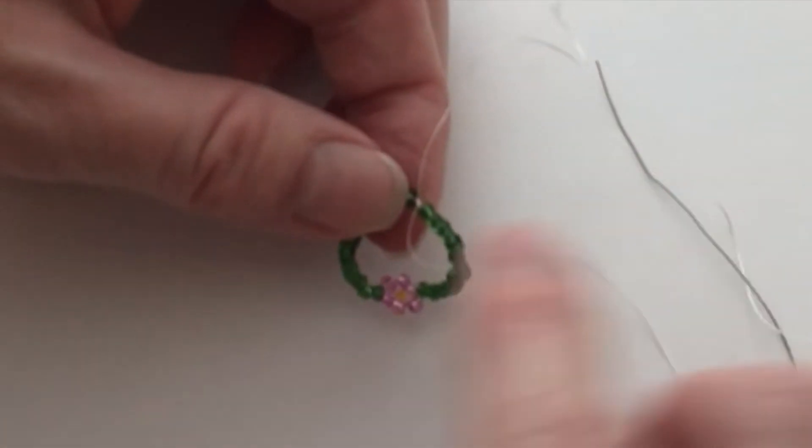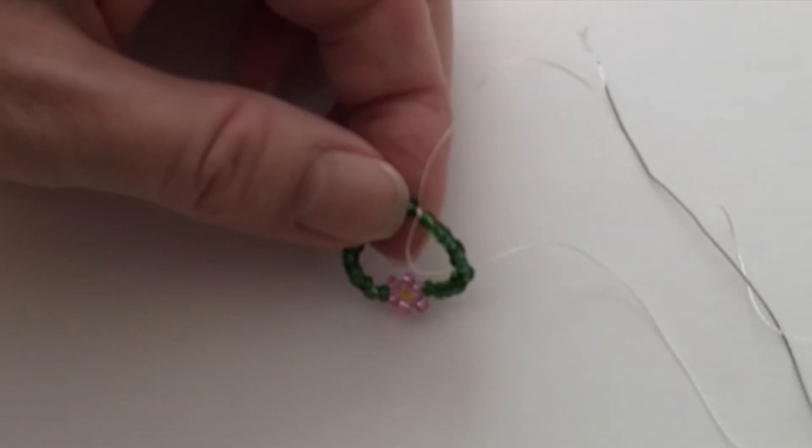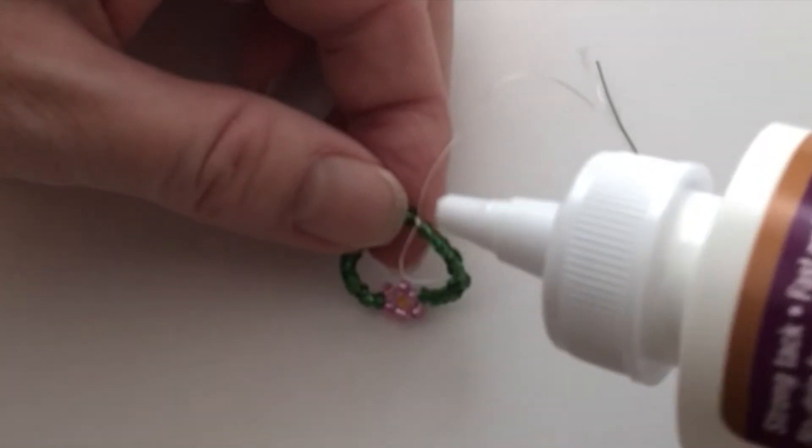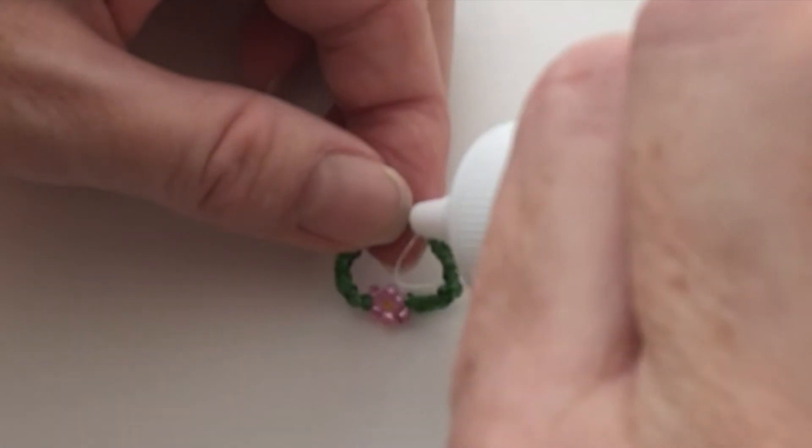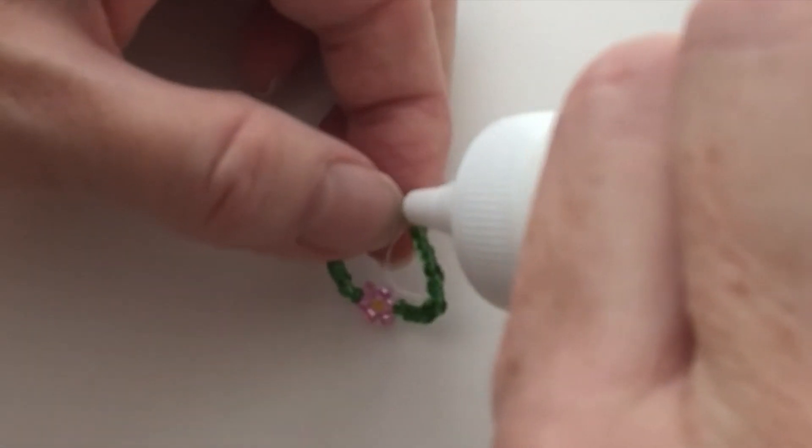Once you have the knot, you want to put a little bit of glue or clear fingernail polish there to make sure that the knot doesn't come undone. So I'm going to add just a touch of this super glue.